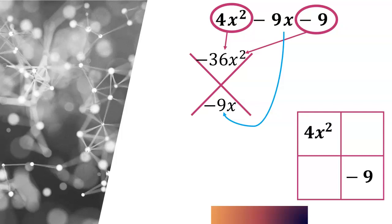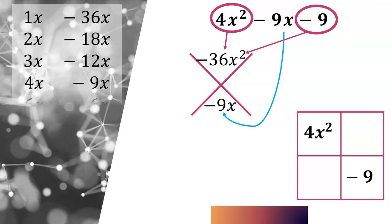And so what I would encourage you to do, if you have a hard time trying to figure out what two numbers multiply together to be -36x² that add together to be -9x, come up with a list of all the factors of 36. So like 1 and 36, 2 and 18, 3 and 12, 4 and 9, 6 and 6 would be all of those factors.